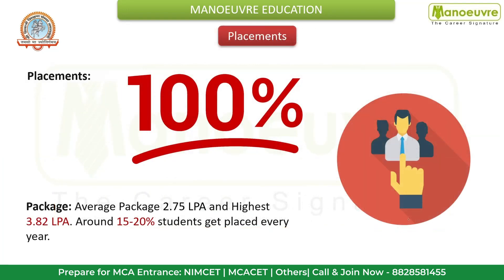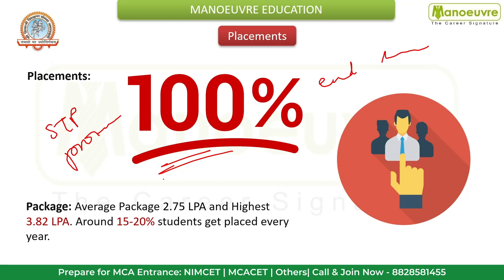The Training and Placement Cell motivates students to prefer jobs that better suit their profile and provides assistance in 100% placement. Training and placement activity begins from the first month of each academic year and continues to the end of the session. The grooming of students starts with a Student Placement Induction Program (STP) for first-year students. According to research-based data, the average package recorded is 2.75 lakh per annum and highest package is 3.82 lakh per annum. Around 15 to 20% of students get placed every year.